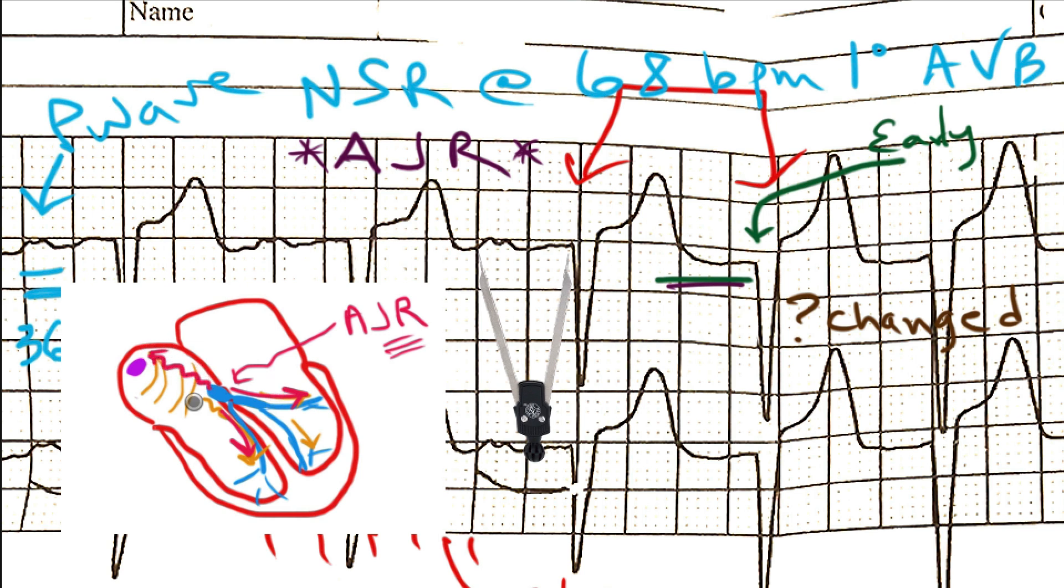And it can occur in front of the QRS complex with a very short PR interval, or it can occur in the middle of the QRS where you don't see it, or commonly you'll see the retrograde P wave after the QRS complex in patients with accelerated junctional rhythm.